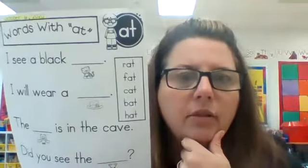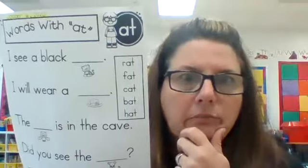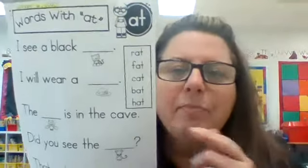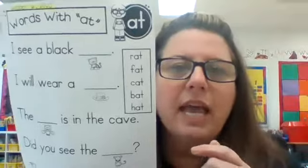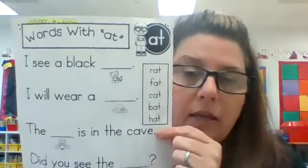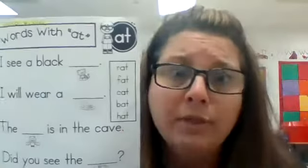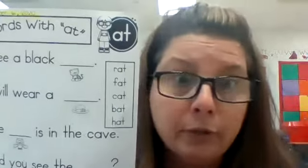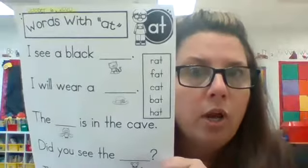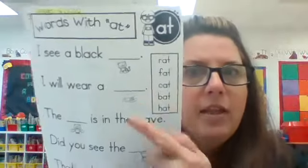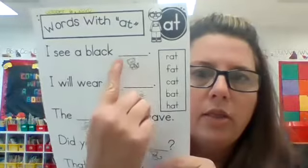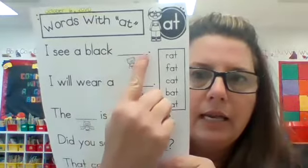Once you know what the picture is, you might say, 'That looks like a cat.' So you're going to find the word in the word bank — I'm not going to show you the word because that would be too easy. You can do this all by yourself. Find the word that goes with the picture and write it on the line.